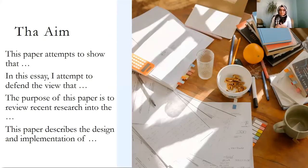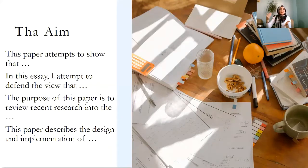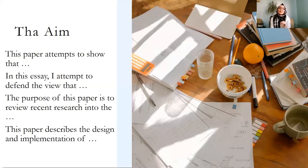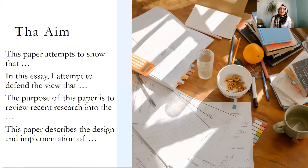Now the aim of the study is very important. But the aim of this study isn't why you're writing the study — because this could be a term project, your aim isn't to score high grades. The aim we want here is why you're studying this certain subject, not why you're writing a term essay. A few examples: 'This paper attempts to show that...', 'In this essay, I attempt to defend the view that...', 'The purpose of this paper is to review recent research into...', 'This paper describes the design and implementation of...'. Take these sample sentences and play around with them.